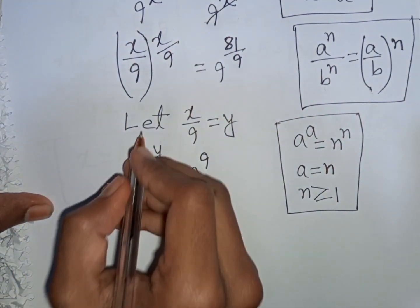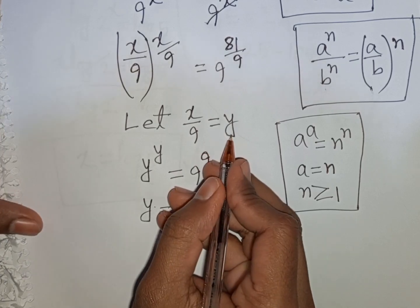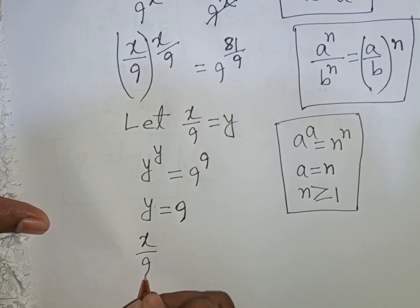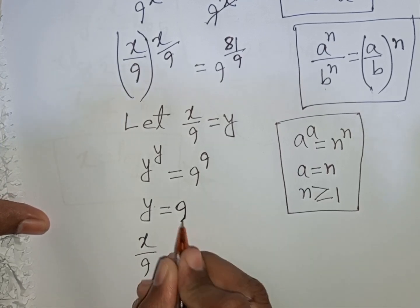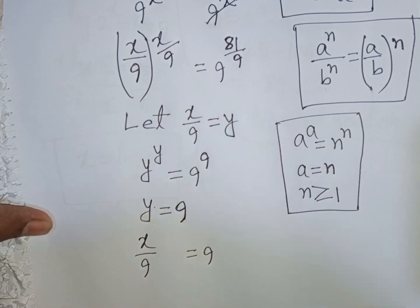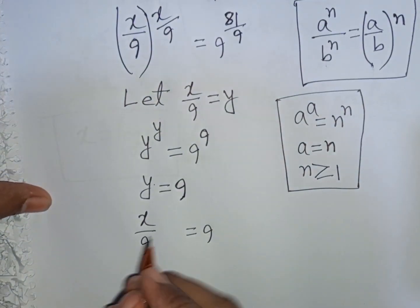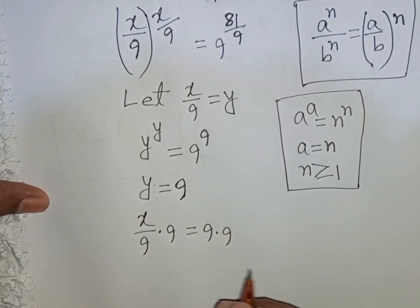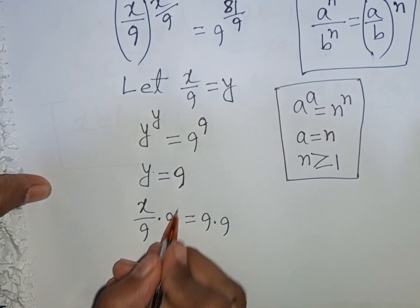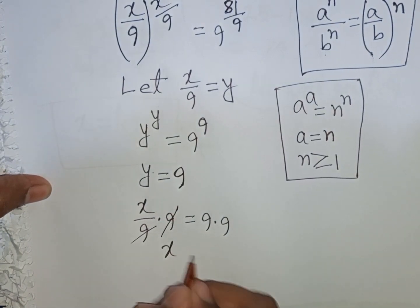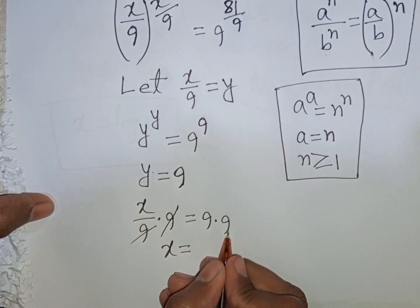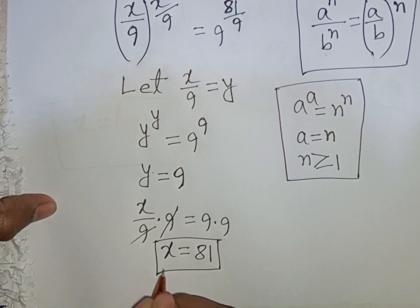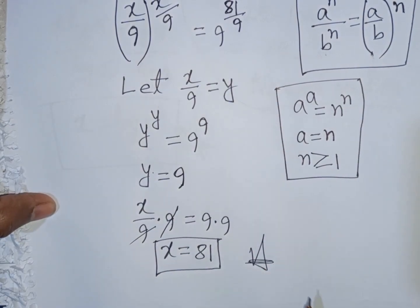Remember that x/9 was substituted by y. So y means x/9, and x/9 is equal to 9. Now we need the value of x, so we multiply both sides by 9. This 9 will cancel, so x is equal to 9 times 9, that means x equals 81. So 81 is the value of x — this is our final answer.